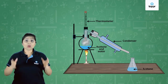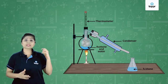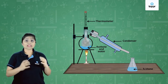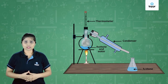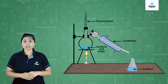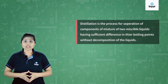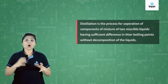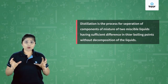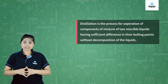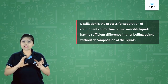This is how we can separate two miscible liquids from each other. A thermometer must be kept in this setup so that we know the temperature difference and can maintain it at 56 as well as at 100 degrees Celsius. Here we could easily separate two liquids because there was a huge difference in their boiling points. Thus, distillation is the process for separation of components of a mixture of two miscible liquids having sufficient difference in their boiling points, without decomposition of the liquids — meaning the liquids should boil and change into vapors instead of splitting into some other substances.